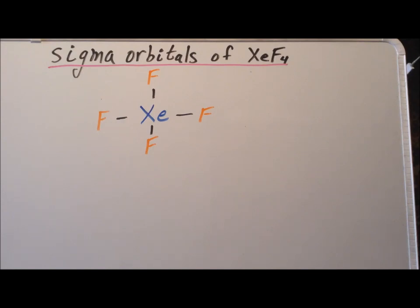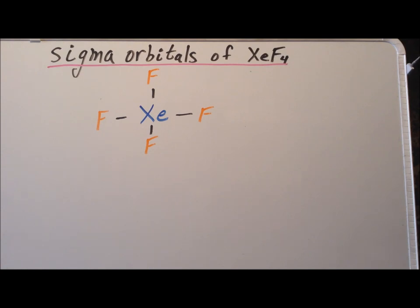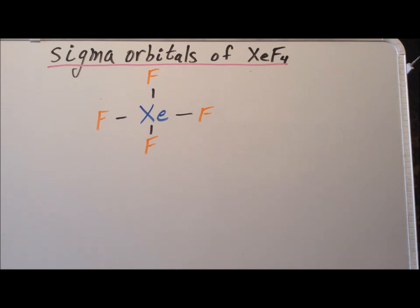Hello. Welcome to a two-video series where we will derive the sigma orbitals of xenon tetrafluoride using the projection operator method. Here we have a sketch of the structure of xenon tetrafluoride, and we can determine, using VSEPR theory considerations, that xenon tetrafluoride is a square planar molecule. Therefore, it belongs to the symmetry point group D4H.